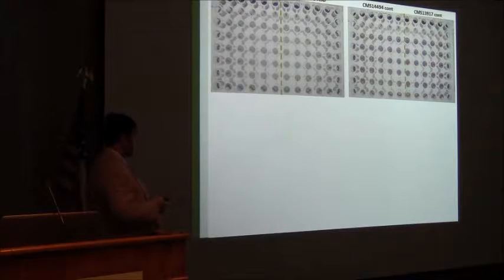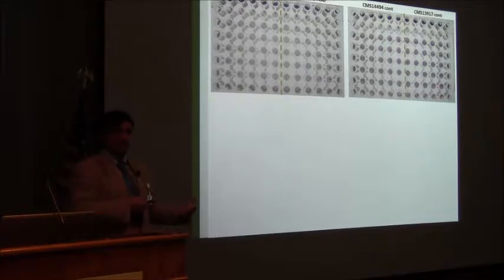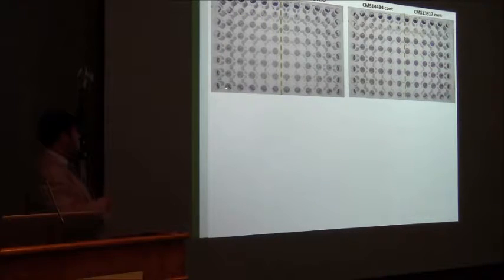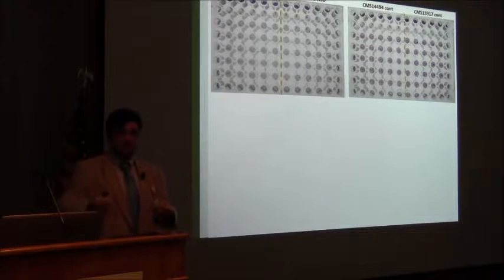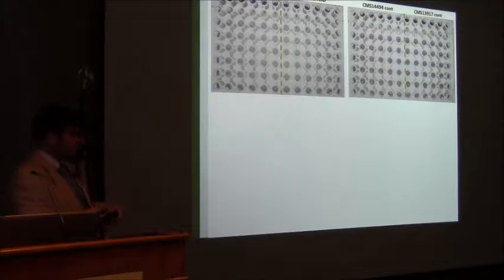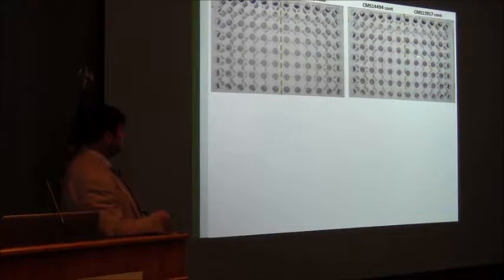Starting from that preliminary data, in collaboration with the company we developed a customized plate that has glucose as a positive control, a negative control, and then six wells containing tryptophan either alone or as part of a dipeptide. In experiments based on six replicates for two patients and two controls, the color in the wells containing tryptophan is quite different between patients and controls.